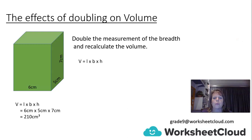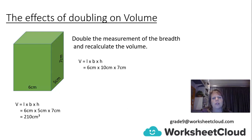Using our formula, length times breadth times height: our length stays the same at 6 cm, we've doubled the breadth to 10 cm, and kept the height the same at 7 cm. Multiplying them together gives us 420 cm cubed. Have a look at your original volume — what's happened?